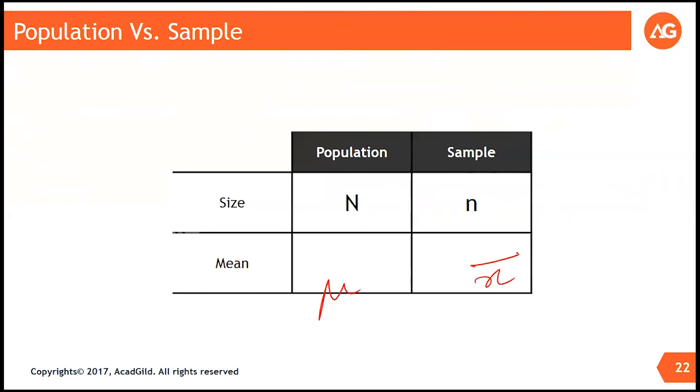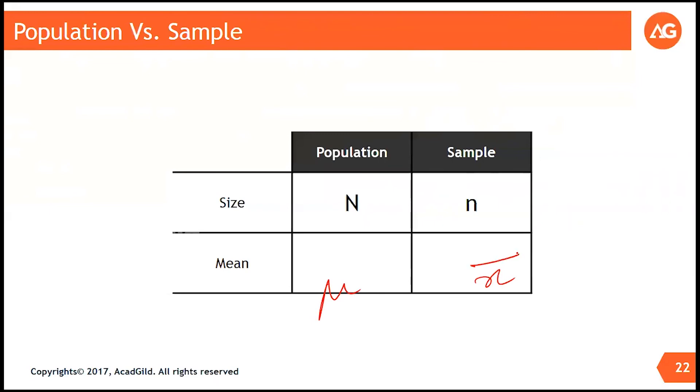Similarly, we have population standard deviation and we have sample standard deviation or variance. The population variance is denoted as sigma square.